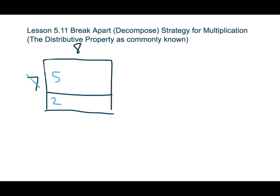So in order to find out how much space we have in our rectangular garden, instead of seven times eight, which would look like this, we're going to break that down so that it's five times eight plus two times eight.